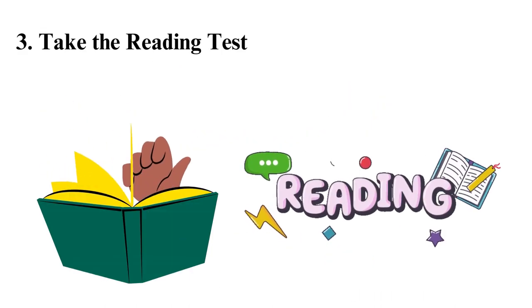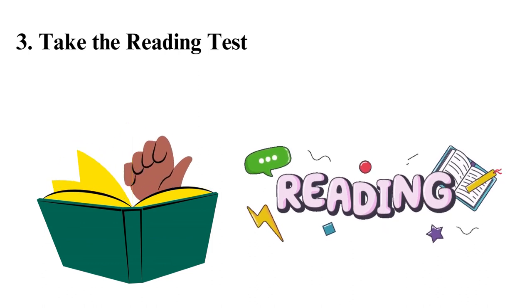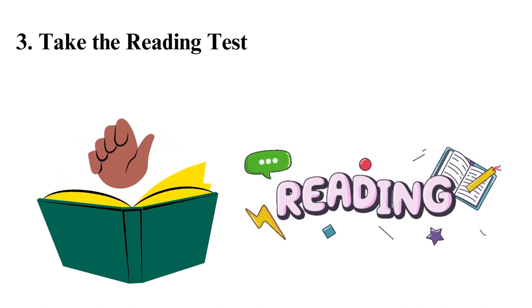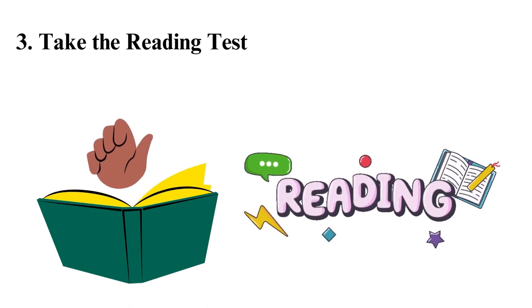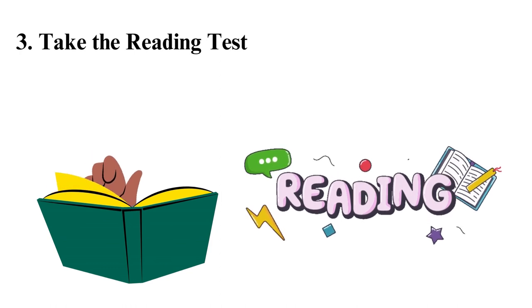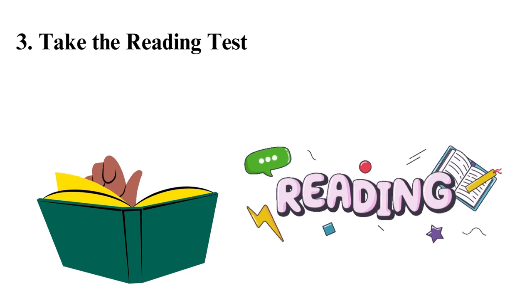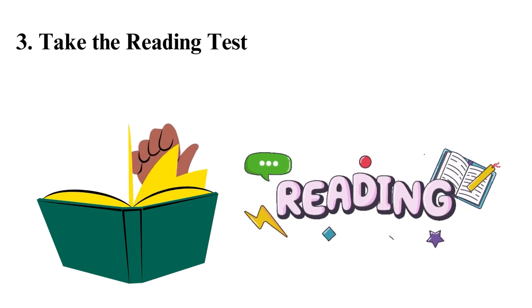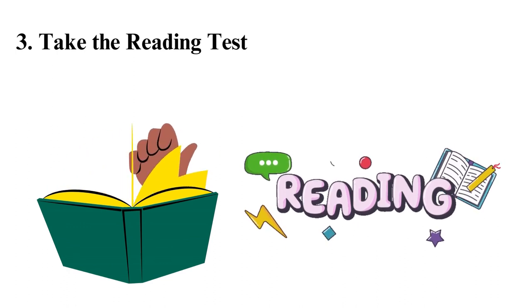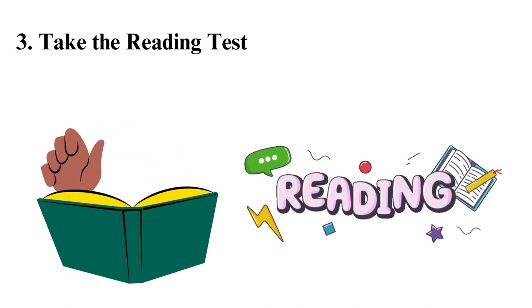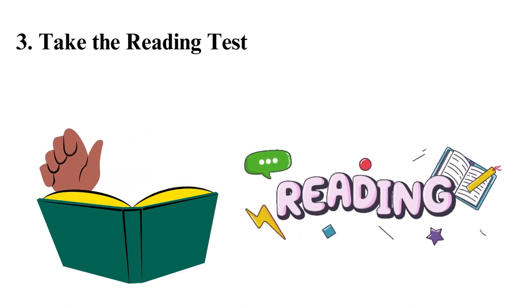Three: Take the Reading test. The ACT reading test evaluates how well a student can read and understand different written materials. It has 40 multiple-choice questions from four reading passages and lasts 35 minutes. The passages come from fields such as: 1. Social studies, 2. Natural sciences, 3. Humanities. The passages are at a level similar to what students might read in the first semester of college. The test aims to check if students can grasp the main points of the passage, deduce conclusions, make guesses, and find the sense of words used in context.